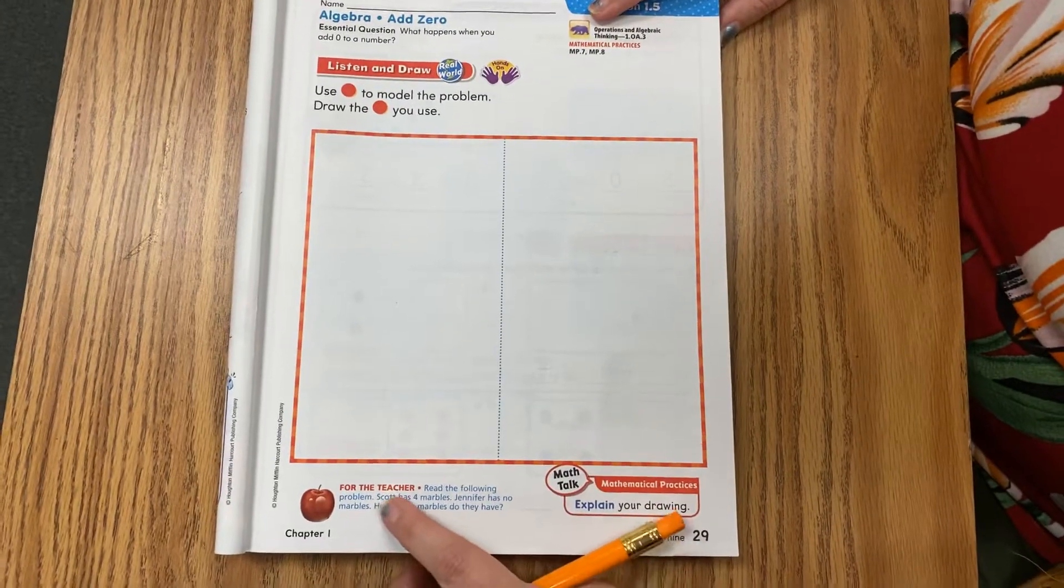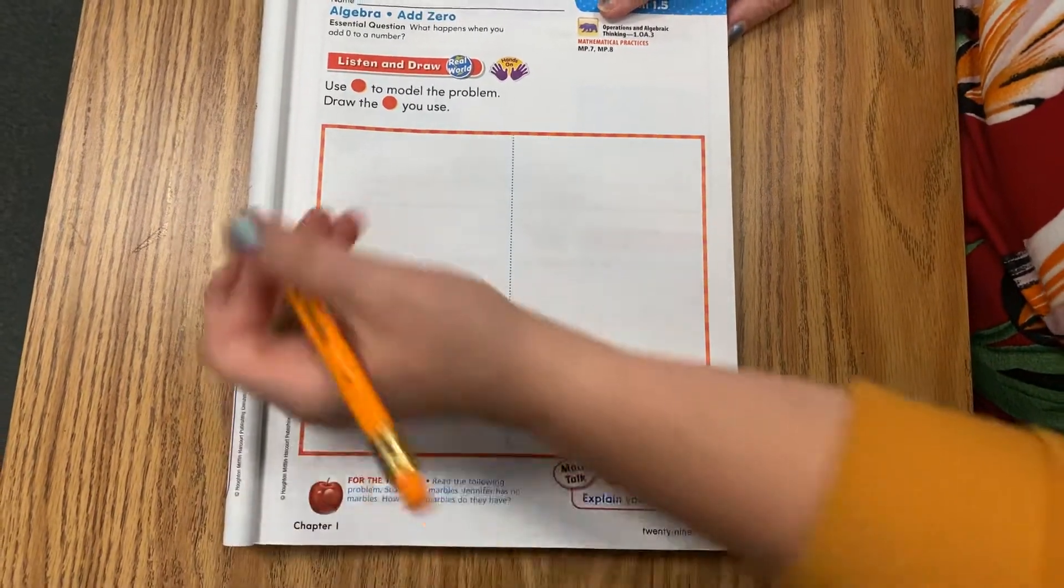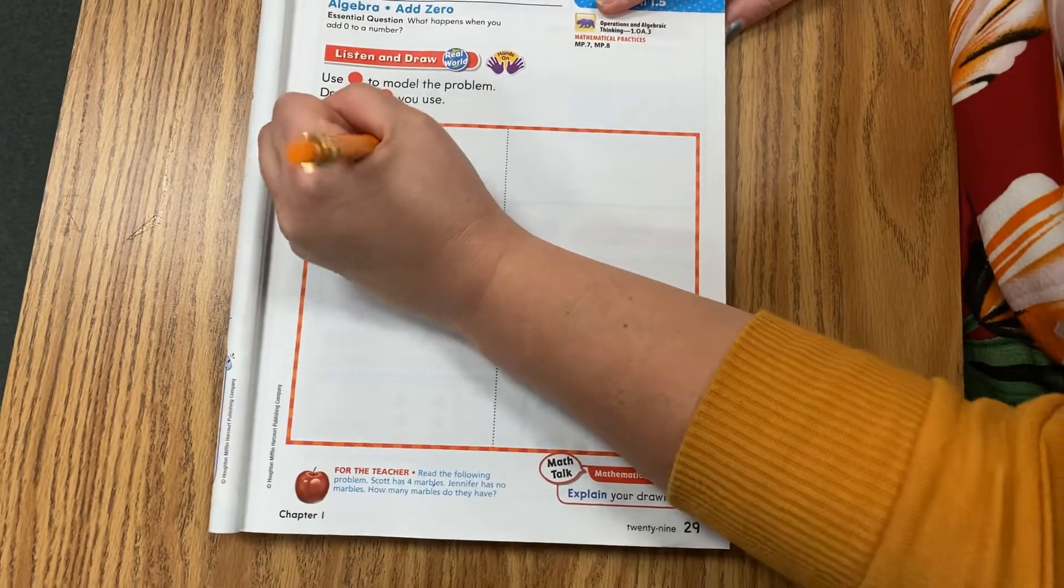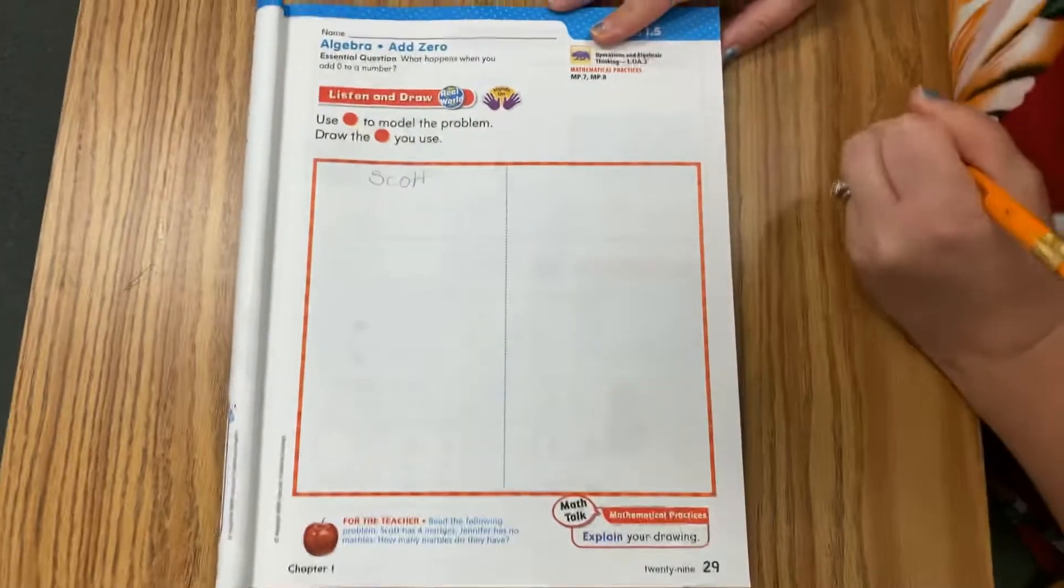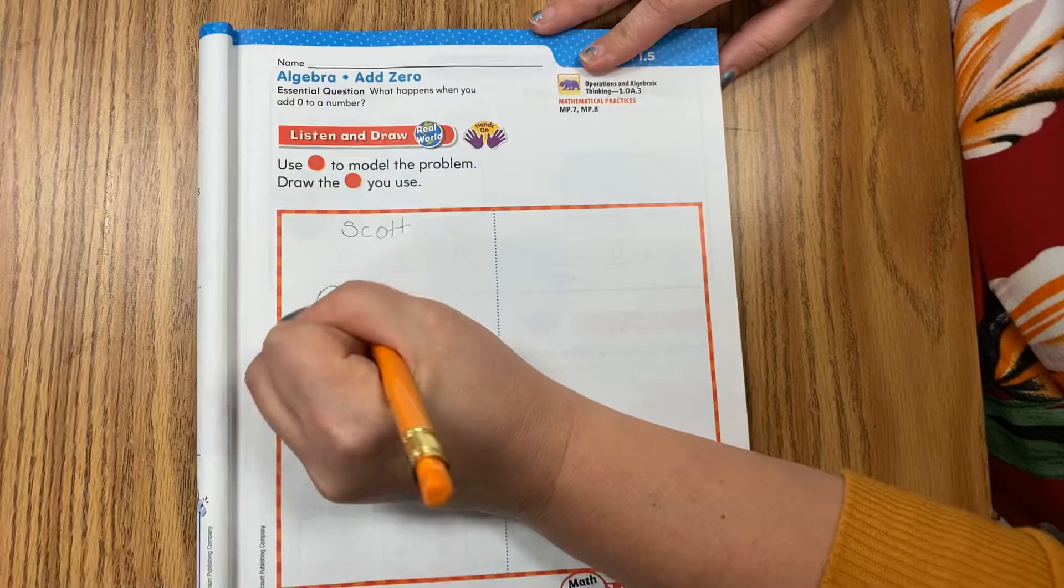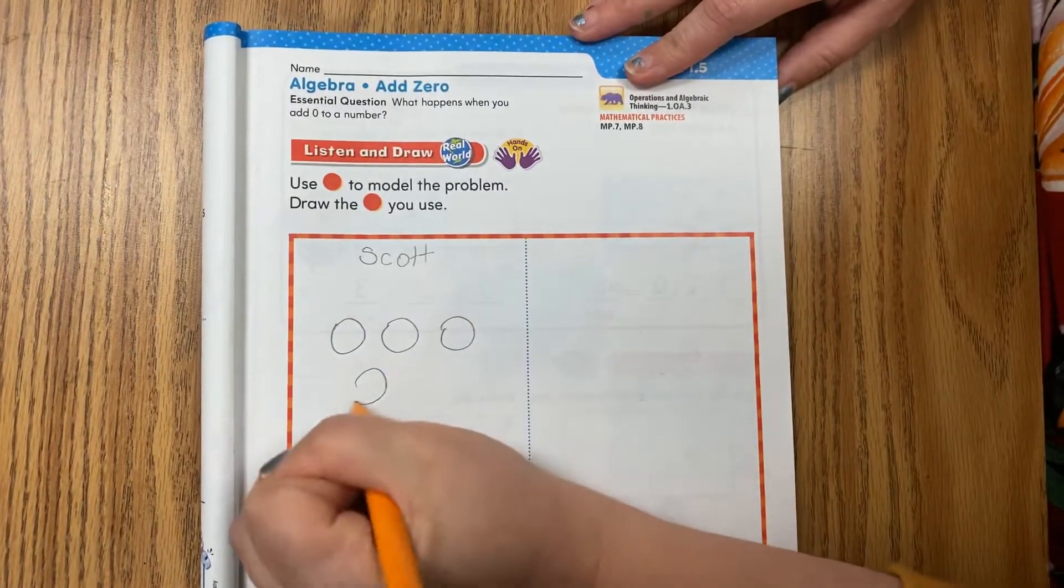So here we go. Scott has four marbles. So I'm going to put Scott right here. Scott gets four marbles. One, two, three, four.